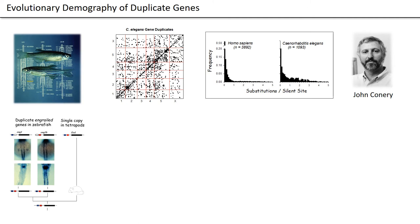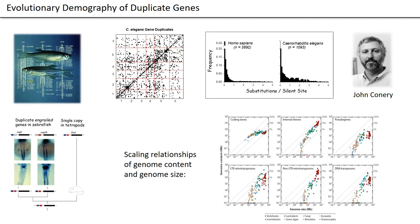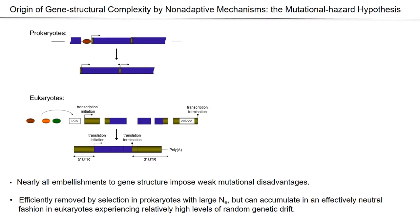As more and more genomes became available, it was possible to think about the scaling relations of genome content and genome size. We quickly learned that the reason that most land plant and animal genomes are particularly expanded is not because of the increase in the coding DNA, but because of the proliferation of all kinds of classes of non-coding DNA — introns, pseudogenes, and all classes of transposable elements — something that wouldn't have surprised Ford Doolittle.